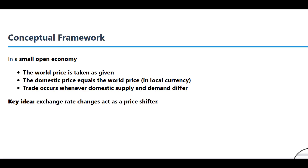This leads to a really crucial point. The world price, which we'll call P*, is exogenous — that's just a formal way of saying it's determined outside of our model. For the firms and consumers we're studying, this price is a fixed reality. They can't change it; they can only react to it. It's a given.